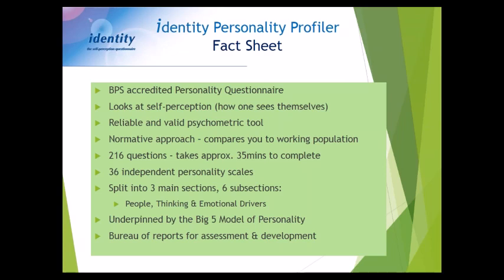Identity is underpinned by the Big Five model of personality, looking at conscientiousness, extroversion, neuroticism, and other dimensions — a model shown time and again to be the five-factor model of personality. It has a bureau of reports for assessment and development, so from one questionnaire there are multiple applications, with this package focusing specifically on recruitment and selection.